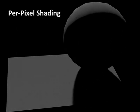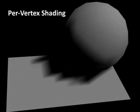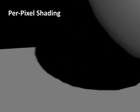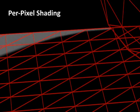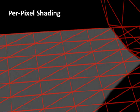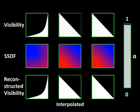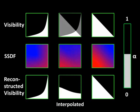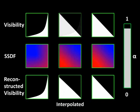To render all-frequency shadows, we propose a visibility representation called the Spherical Signed Distance Function, or SSDF. It preserves sharp shadow edges inside triangles, even though the representation is sampled and stored per vertex. Interpolating between binary visibility functions yields a double image, or ghost. We convert binary visibility to an SSDF, which records the signed spherical distance at each point to its nearest visibility boundary.